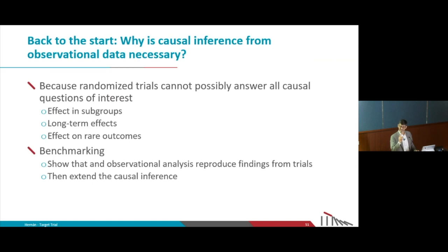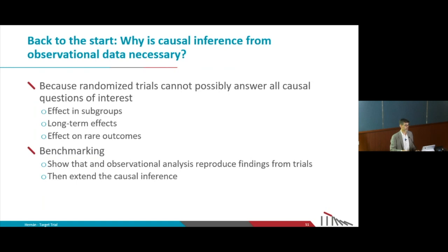That doesn't mean we don't need trials. If we have randomized trials, the first thing we can do is replicate their results with the observational data — we call that benchmarking. Once we have shown we can reproduce what the trials found, we can extend. That gives us confidence that if we could replicate what we know is the truth, when we extend, there is a greater chance we are doing it right.